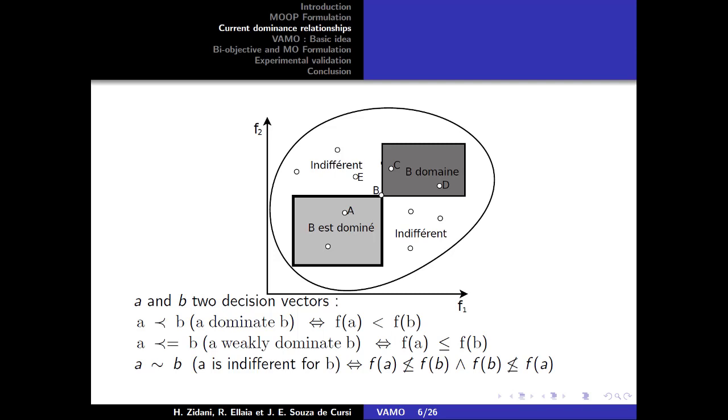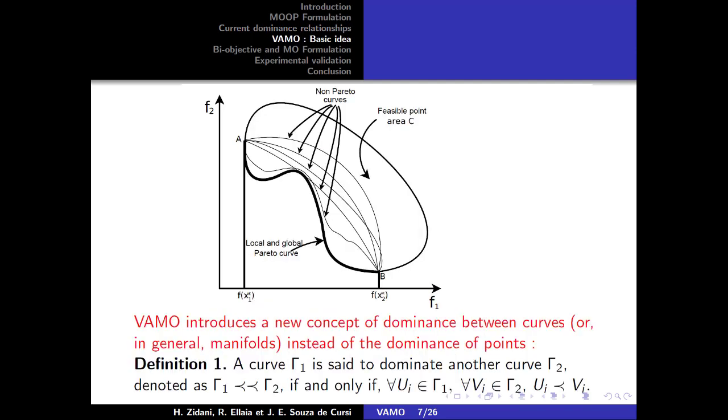Pareto optimality is based on the idea of dominance, which defines a partial ordering on the objective space. The Pareto optimality concept, which was first proposed by Edgeworth and Pareto, is formally defined as follows. VAMO introduced a new concept of dominance between curves, or in general manifolds, instead of dominance of points, so that we introduce the following definitions.